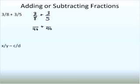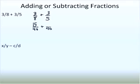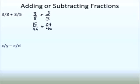I'm going to change these two fractions so that they both have a denominator of 40. 8 times what gives me 40? It's 8 times 5, so I multiply the 3 times 5 to get my new numerator of 15. Similarly, 5 times what gives me 40? 5 times 8. So I multiply 3 times 8 to get my new numerator of 24. That gives me 39 over 40 when I add the numerators.